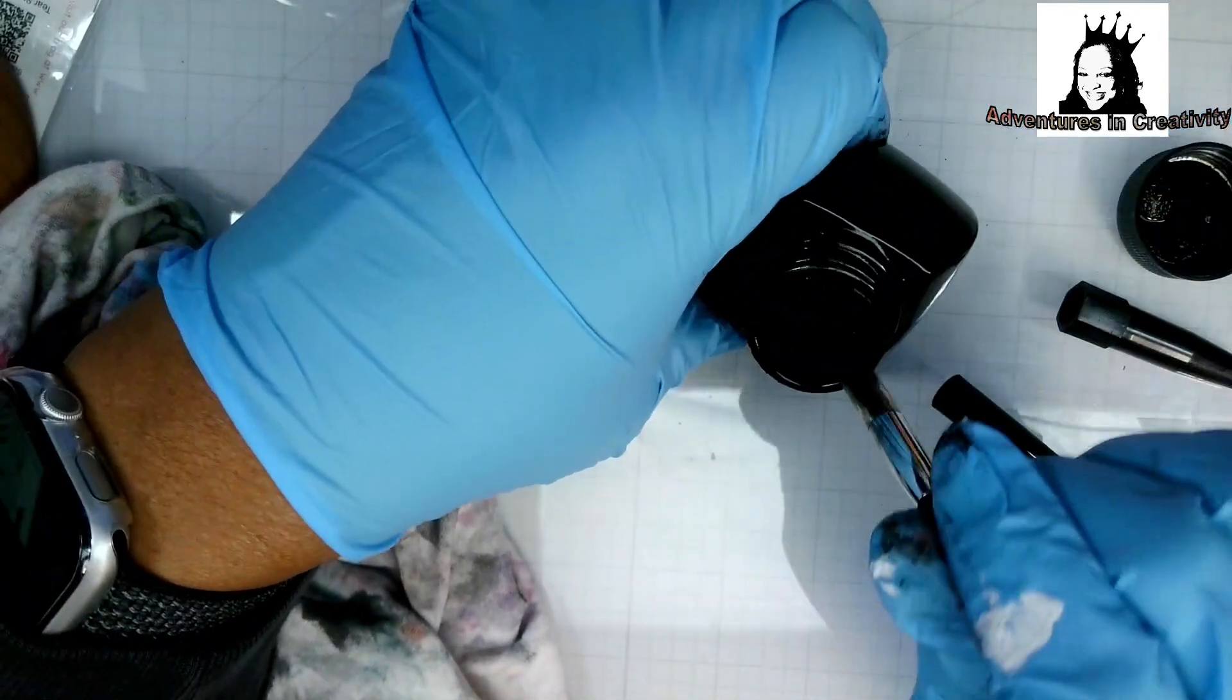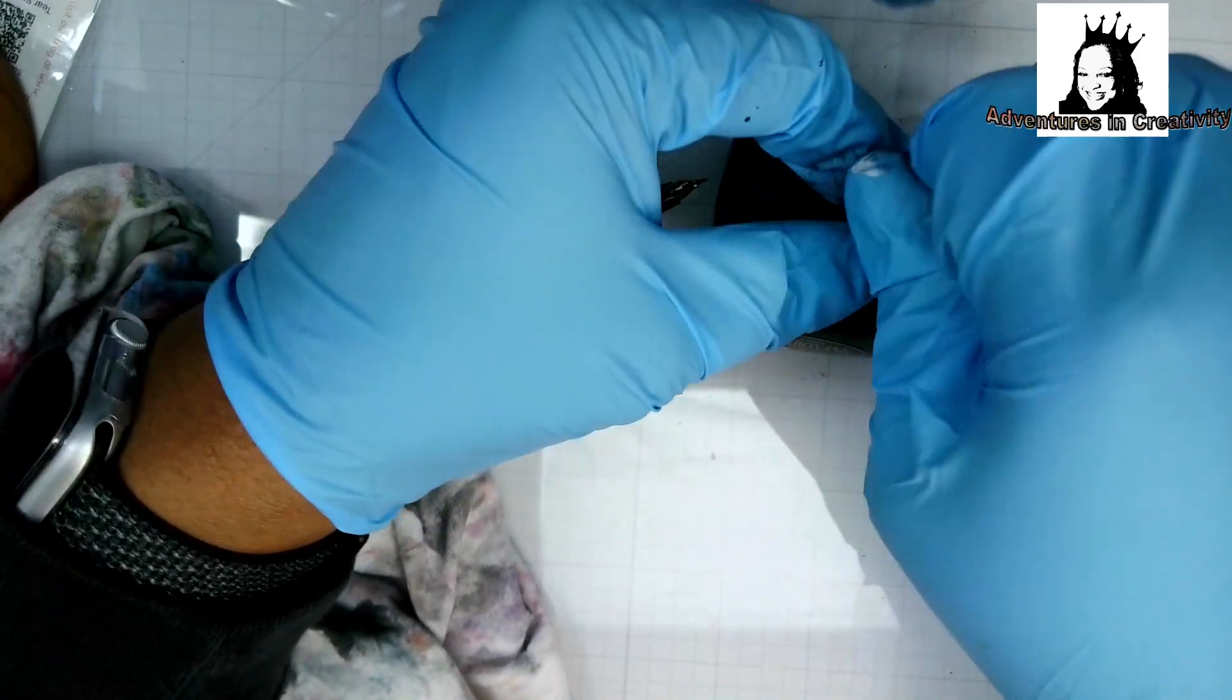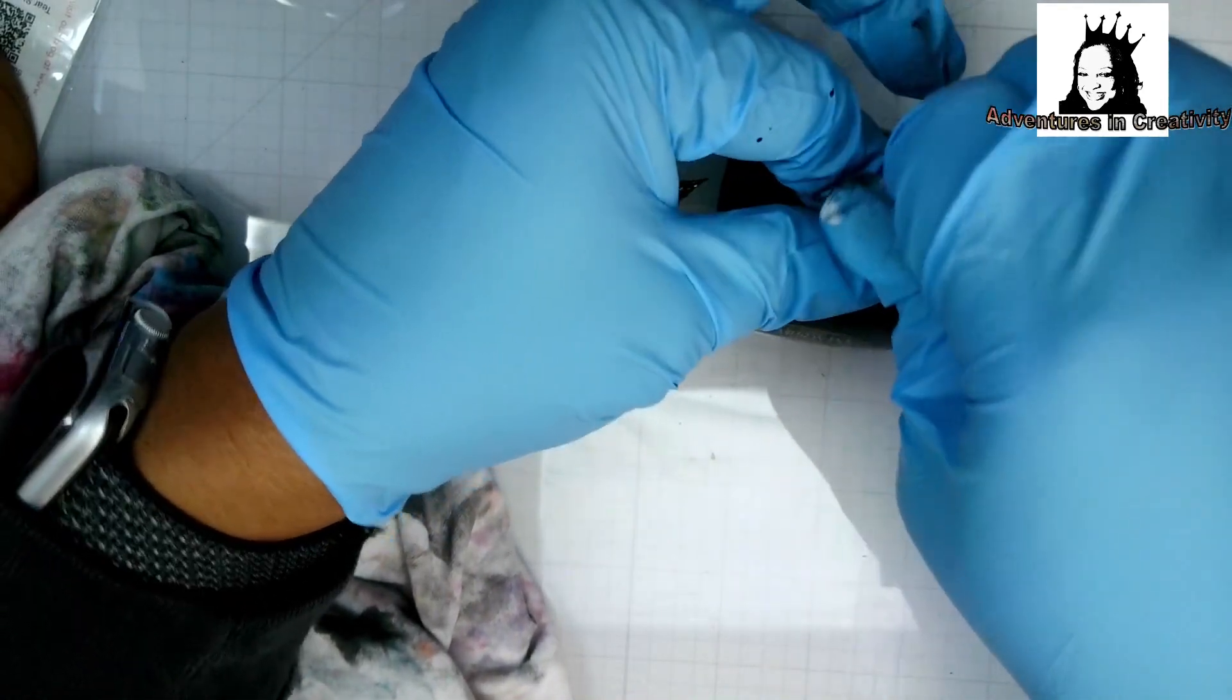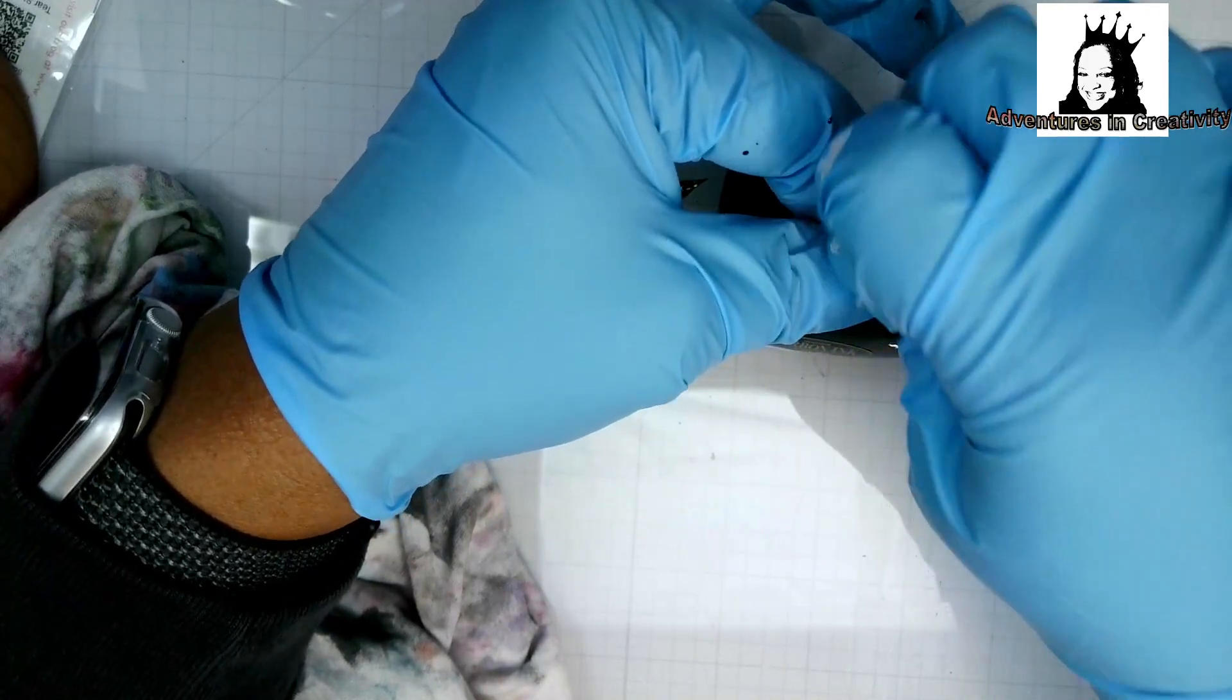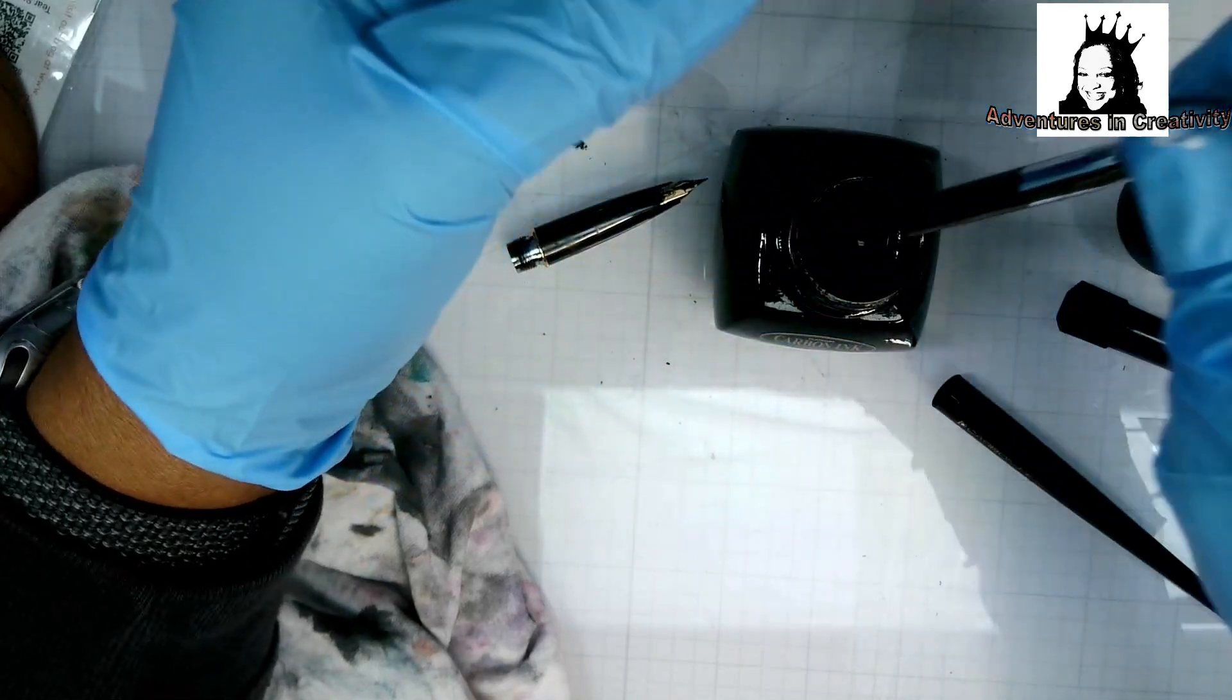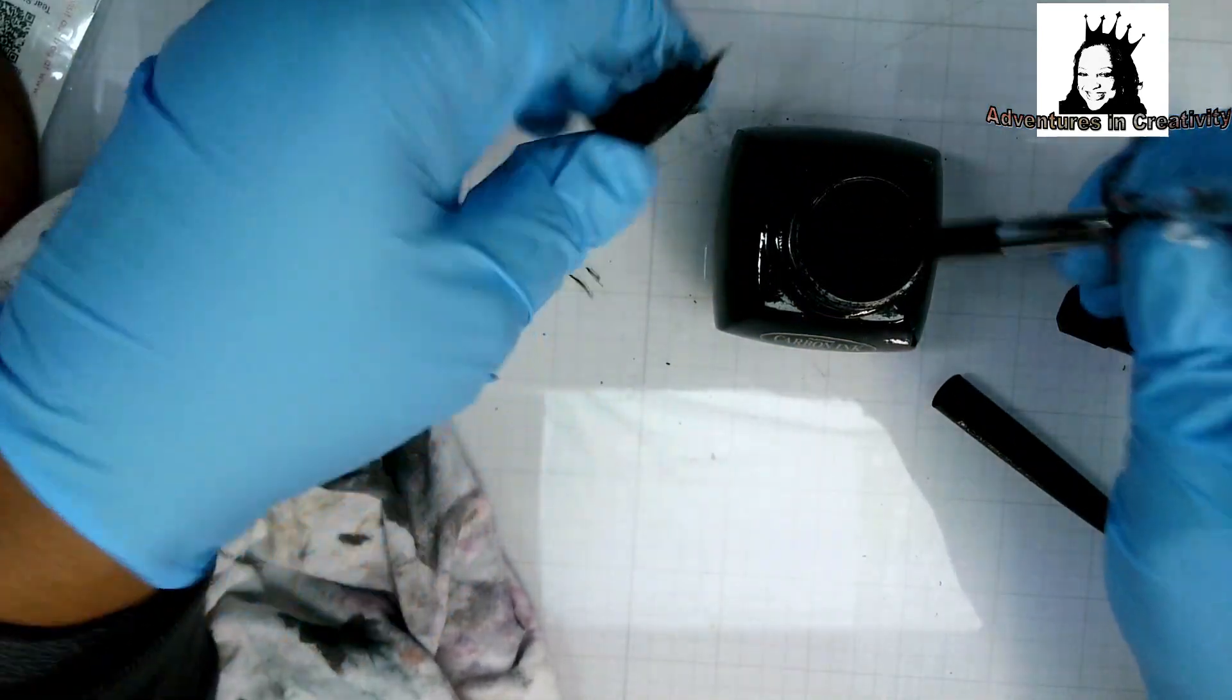What you do is you get your converter down in the ink and twist. This is going to the right so that it can suck up some ink. So it should be full now.